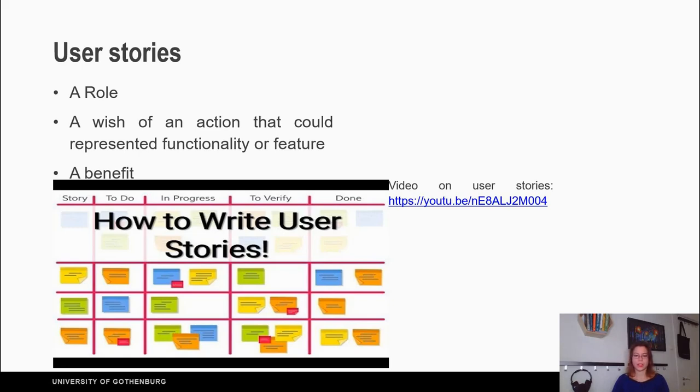A user story consists of the following: a role, a wish of an action that could represent a functionality or feature, and the benefit. Details about user stories you can find in the video which link is placed in the description.